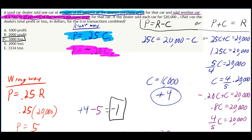A used car dealer sold one car at a profit of 25% of the dealer's purchase price for that car and sold another car at a loss of 20% of the dealer's purchase price for that car. If the dealer sold each car for $20,000, what was the dealer's total loss or profit in dollars for the two transactions combined?